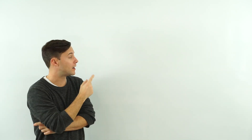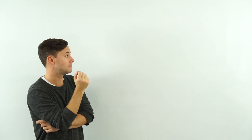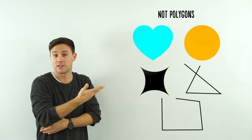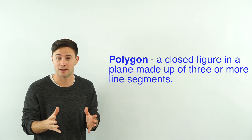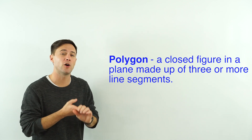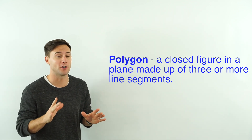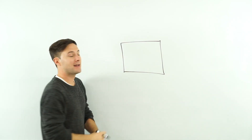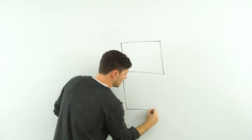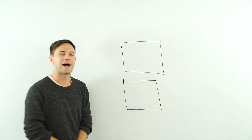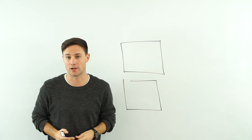What are polygons? These are all examples of polygons. These are not. What's the difference? Well, a polygon is a closed figure in a plane made up of three or more line segments. Now let's break that down. First, closed — that shape is closed. But if I do the same and stop there, this little opening here means it is not closed and therefore not a polygon.